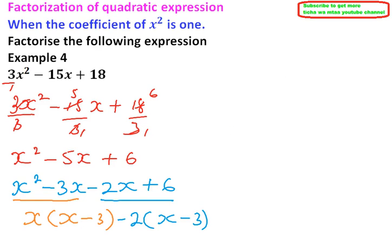So now, x minus 3 is common in both terms, so we factor it out, x minus 3, close the bracket, and here we will be left with x and minus 2.